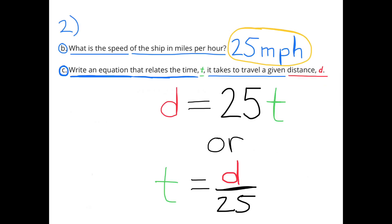Part C. Write an equation that relates the time, T, it takes to travel a given distance, D. The distance equals 25 times T, or D equals 25T. Another way to write an equation that would relate the time, T, it takes to travel a given distance, D, would be time equals distance divided by 25, or T equals D over 25.